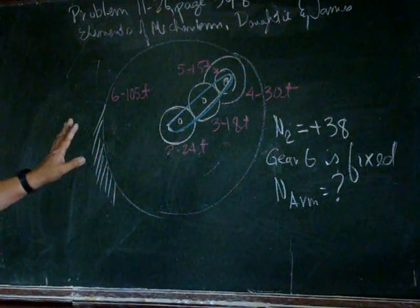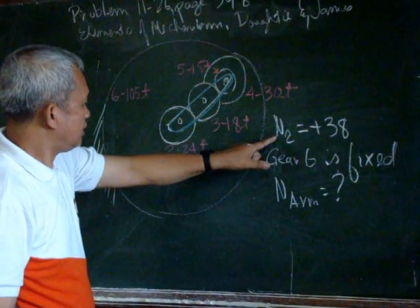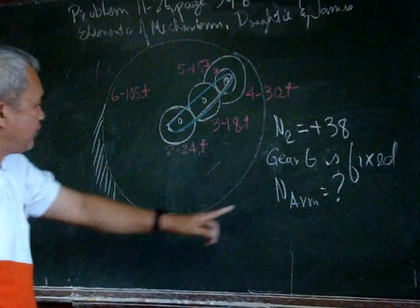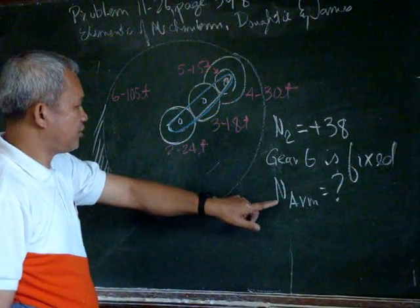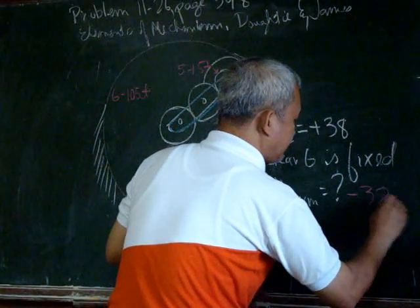With this given, gear 2 is rotating 38 times, and we have to determine the rotation of the arm. Actually the answer is negative 32.